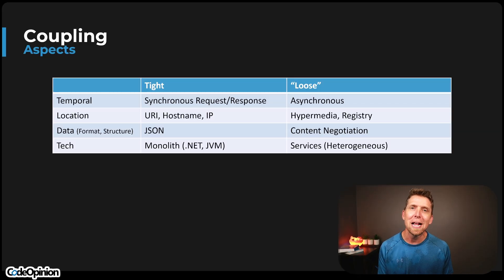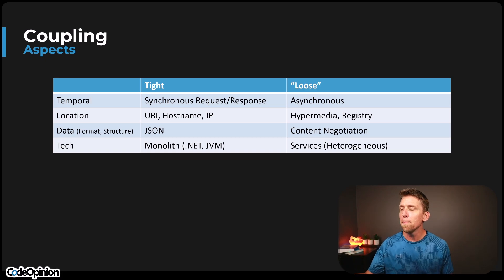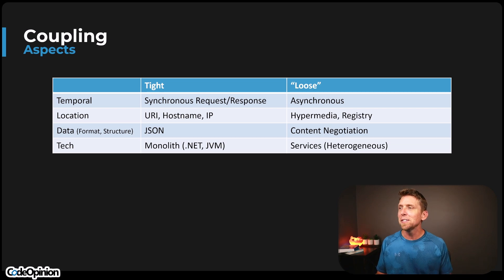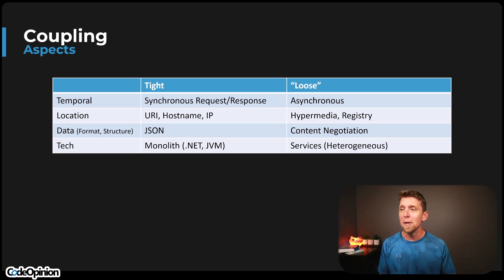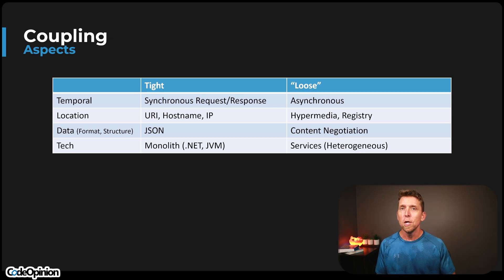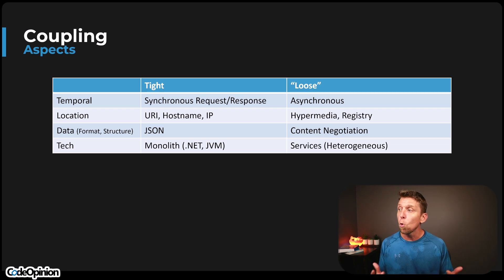So there are many different aspects of coupling to think about. We mentioned temporal: if you're making HTTP requests to some HTTP API, it's a synchronous request-response — there's that temporal aspect. If you're using something like a message queue, message broker, and topics with publish-subscribe, you're removing that and being asynchronous, so that's more loose coupling on that side.